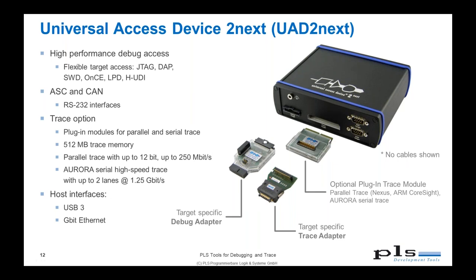With the trace modules, the UAD2 Next allows either parallel trace up to 12-bit at 250 megabits per second, or serial trace using the appropriate plug-in module. AURORA is supported at up to 1.25 gigabits per second. To connect to your host PC, it provides a USB 3 interface as well as Gigabit Ethernet, so you can plug this device into your company network and access it via IP address — very useful for home office scenarios via VPN.